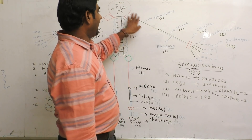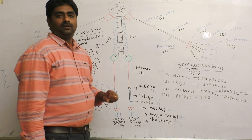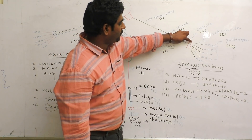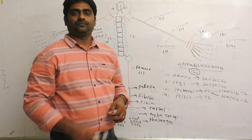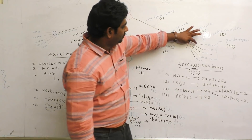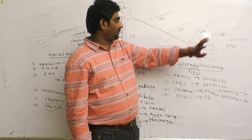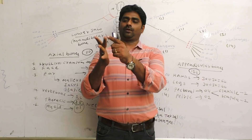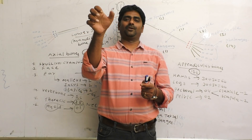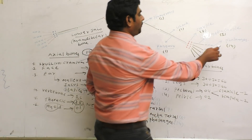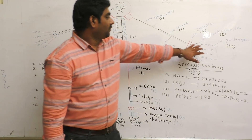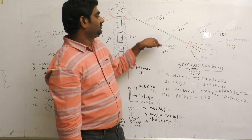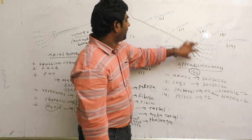In the hand: the upper arm bone is the Humerus, the forearm bones are the Ulna and Radius. Carpal bones (wrist) = 8. Metacarpals = 5. Phalanges (fingers) = 14, with the thumb having 2 and each other finger having 3. Total per hand: 8 + 5 + 14 + 3 (humerus, ulna, radius) = 30 bones. This is the distribution of hand bones.